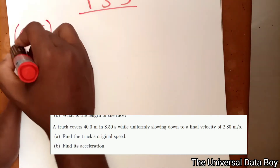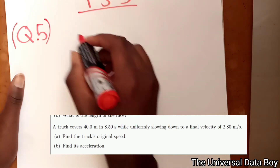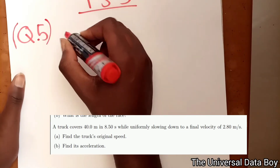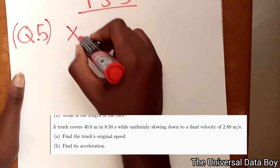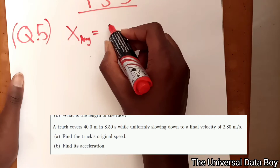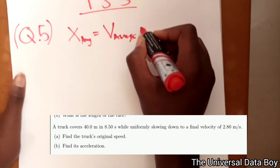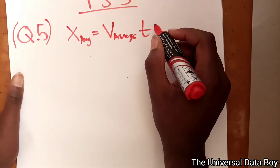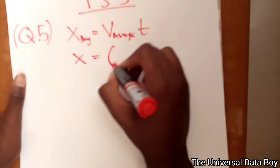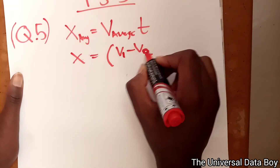We are going to utilize the distance formula — specifically the average distance formula. The average distance is given by the average velocity times the time. The average velocity will be given by v1 minus v2 over 2.